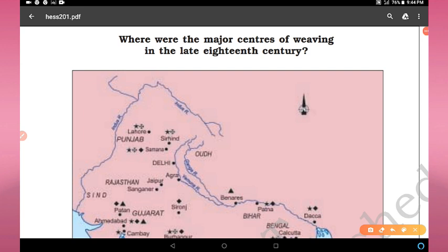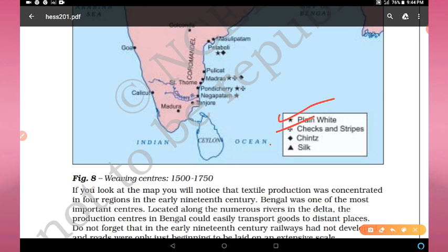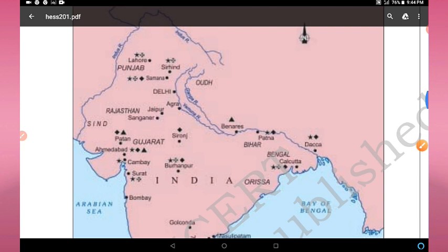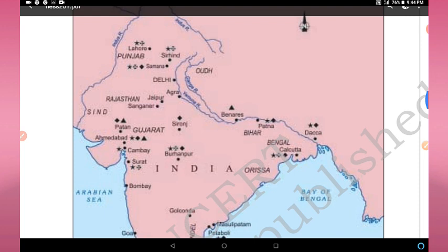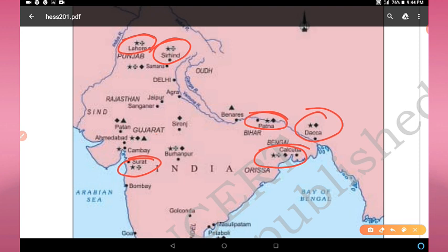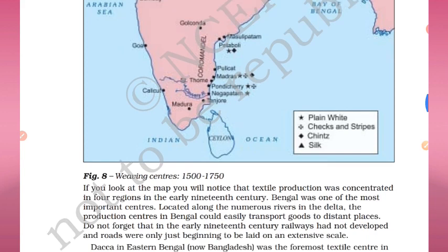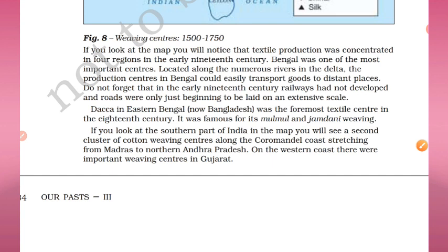With the help of this map we can identify the major centers of weaving in the late 18th century. Different symbols represent different types of cloth — plain white, checks and stripes, chintz and silk. For example, the star symbol marks plain white cloth centers such as Lahore, Sarhind, Patna, Dhaka — now in Bangladesh — Surat, Ahmedabad, and Burhanpur. You can fill in a blank map using these weaving centers from 1500 to 1750.